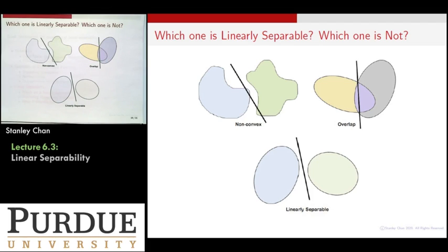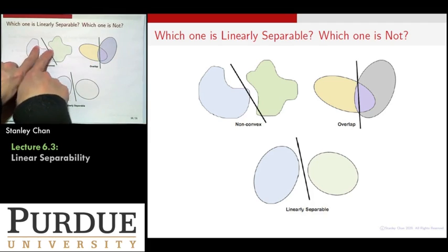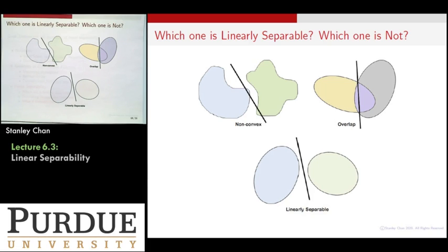There will be some intrinsic limit of this problem. For this, if you find a good decision boundary, you can still separate them. It's just that you need to find a more complicated decision boundary.